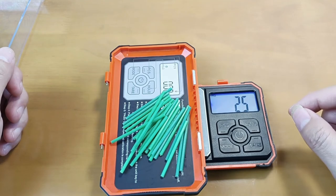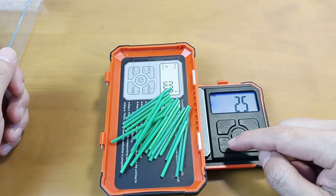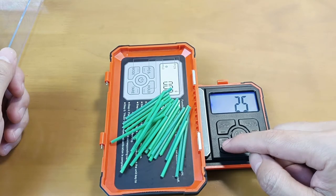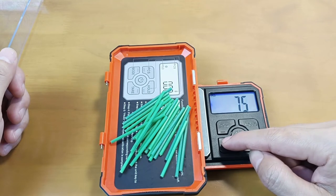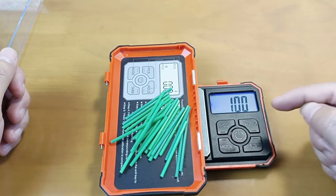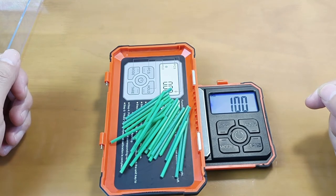Press mode to select the number. There are 4 numbers: 25, 50, 75, 100 for option. Since we put 25 pieces sticks...